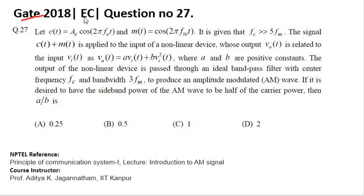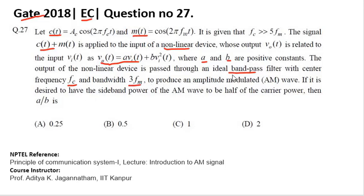This question was asked in GATE 2018 Electronics and Communication. You are given a carrier signal c(t) and message signal m(t), and c(t) plus m(t) is applied to a non-linear device whose input-output relation is given by an equation where a and b are constants. The output is fed through an ideal band pass filter with center frequency fc and bandwidth 3fm, which generates the amplitude modulated signal. The ratio of sideband power to carrier power is 1/2, and you need to find the ratio a/b.